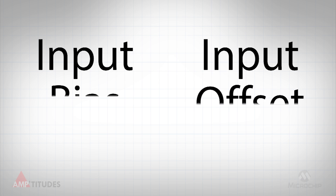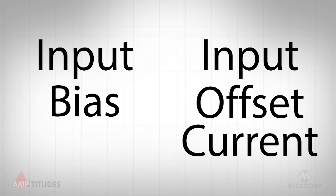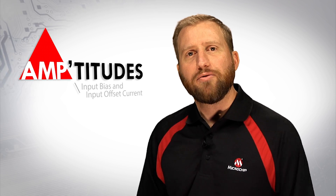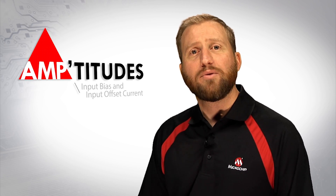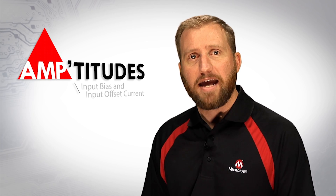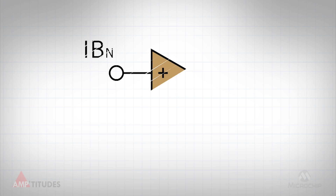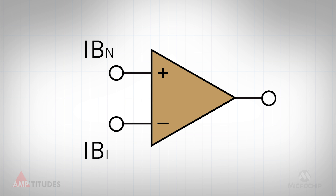Although related, these two specifications highlight different characteristics, and both must be taken into account when calculating a signal conditioning error budget. Let's take a moment to address the actual definition of these two specifications. The two physical currents that flow into an op-amp's non-inverting and inverting inputs are shown here as Ib sub N and Ib sub I.